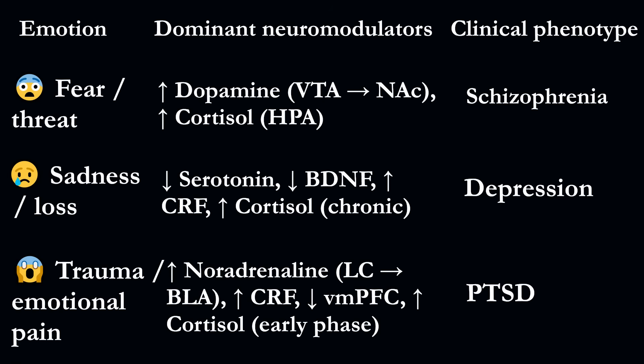When such uncontrolled activation occurs, the outcome depends on which emotional engram cells are activated. If fear engrams ignite, there is a rapid surge of dopamine and cortisol. When sadness dominates, serotonin and BDNF decrease while cortisol levels rise. And during traumatic replays, noradrenaline and CRF stimulate the amygdala and insula, producing brief irregular bursts of cortisol.